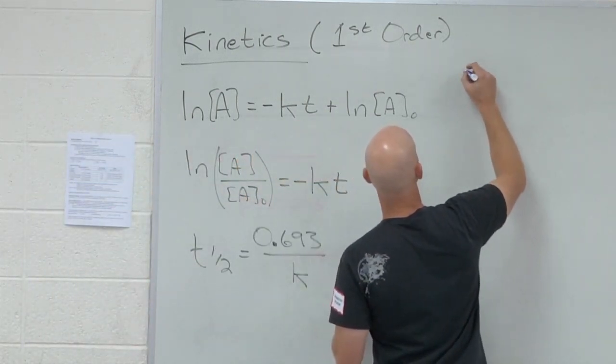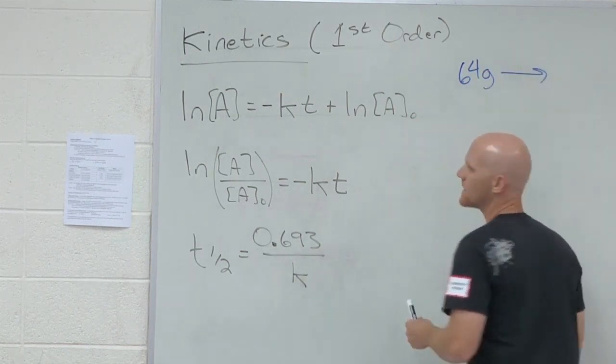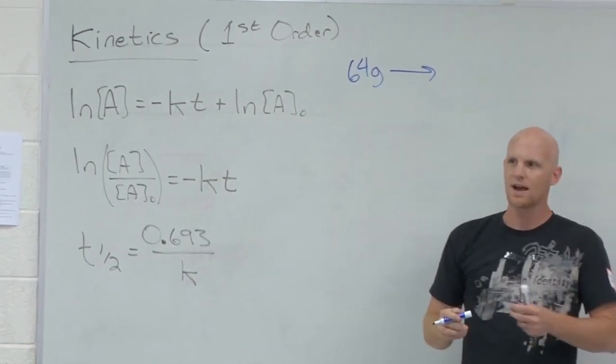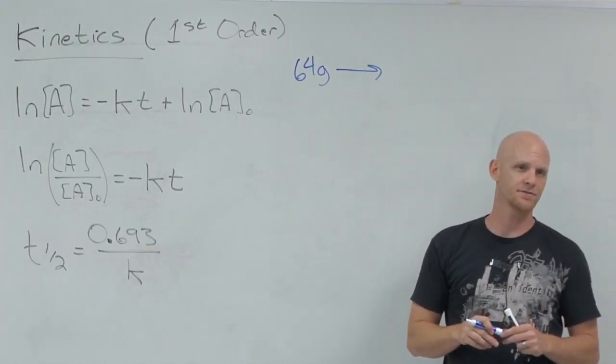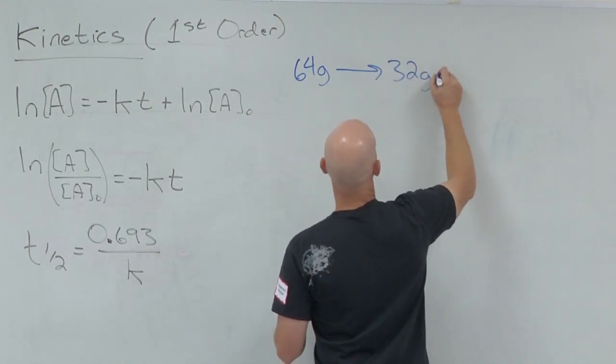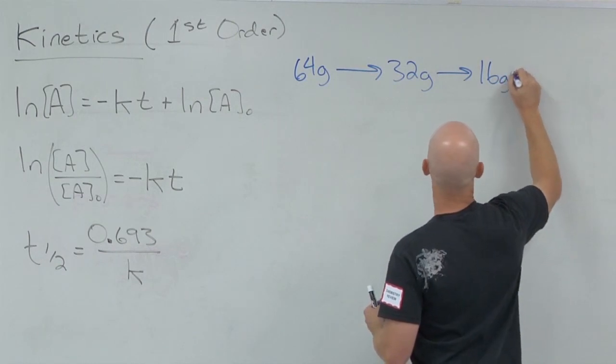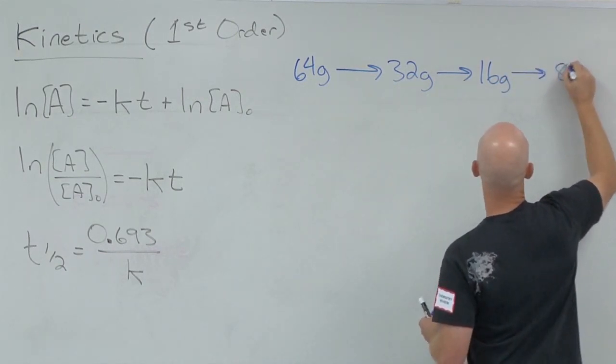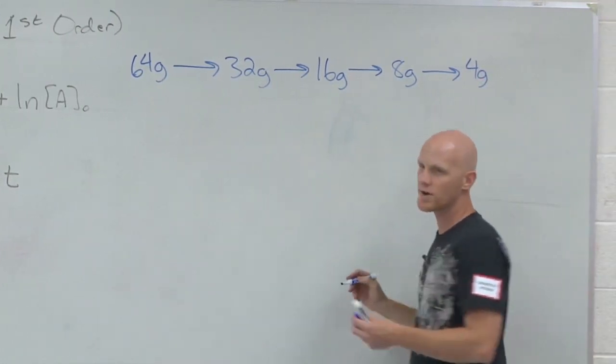Let's say I've got 64 grams of a radioactive substance. How many grams of it would be left after a half-life? 32 grams. How much would be left after another half-life? 16 grams. Another half-life. 8 grams. Another half-life. 4 grams. And so on and so forth.